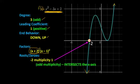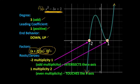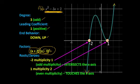Let's go to the other zero, considering x minus 1 squared. The root is positive 1, multiplicity 2. It has an even multiplicity, therefore it touches the x-axis. Look at our graph — at x = 1, it touches the x-axis. So that is our graph and that's how you interpret the graph of this function.